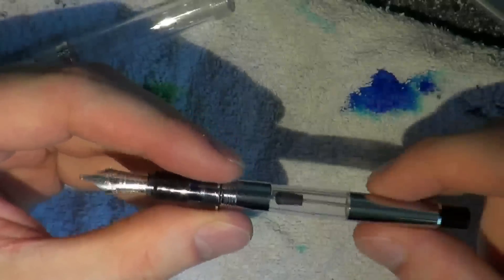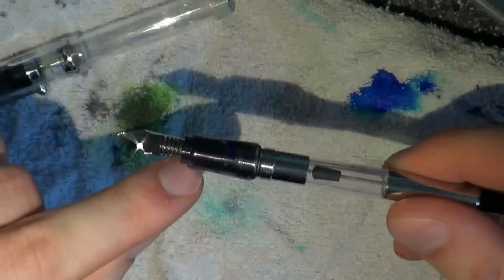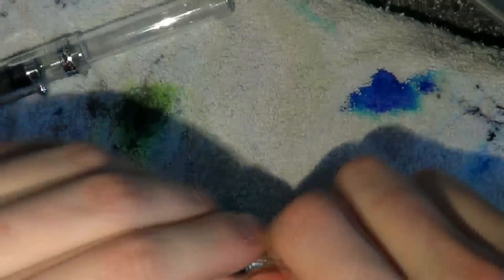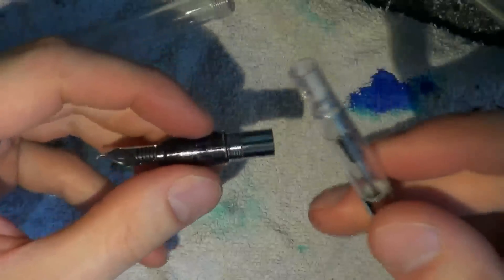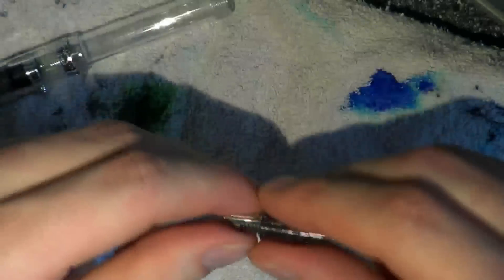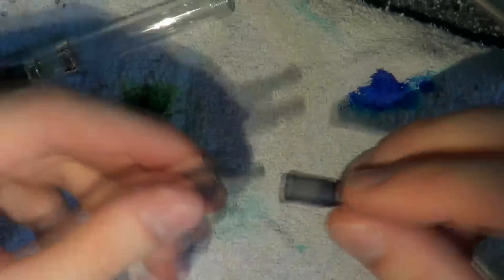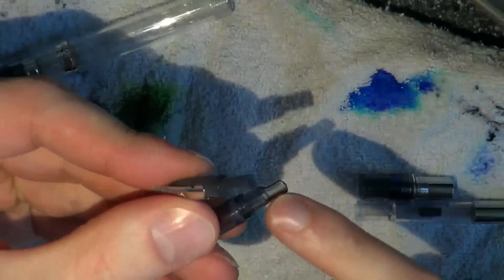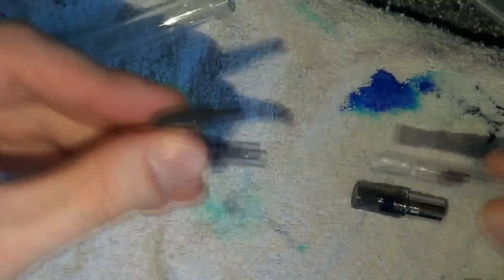And as you can see, the nib unit is coming out. Now give it a firm twist, take the converter out, then just remove the entire nib unit. Here you got the nib collar. Carefully pull it out. Be careful you don't snap off the plastic part that holds the converter in place.